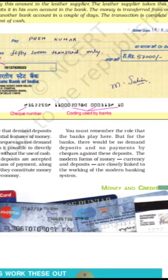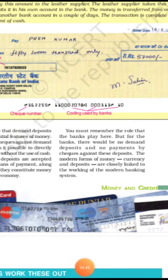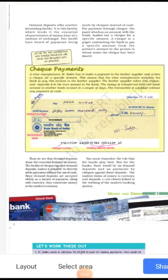Cheques, ATM cards, debit cards, etc. are all examples of the modern banking system, through which we can run a cashless society.